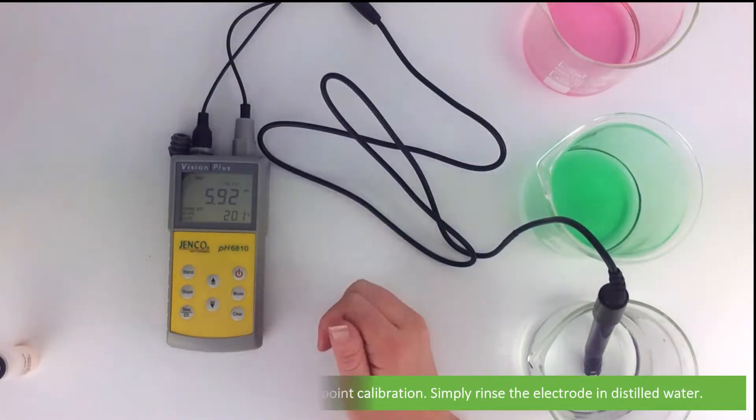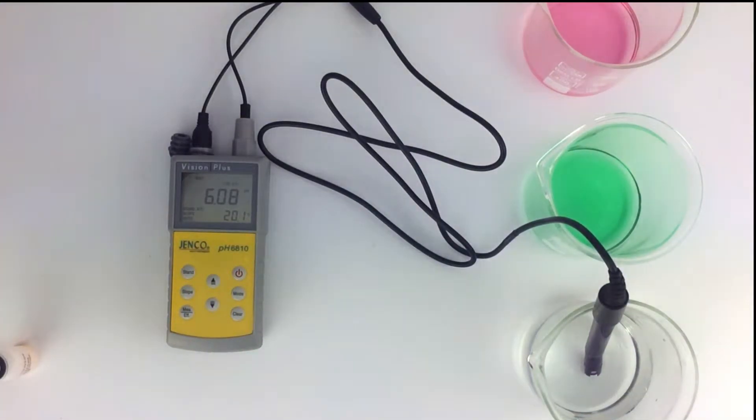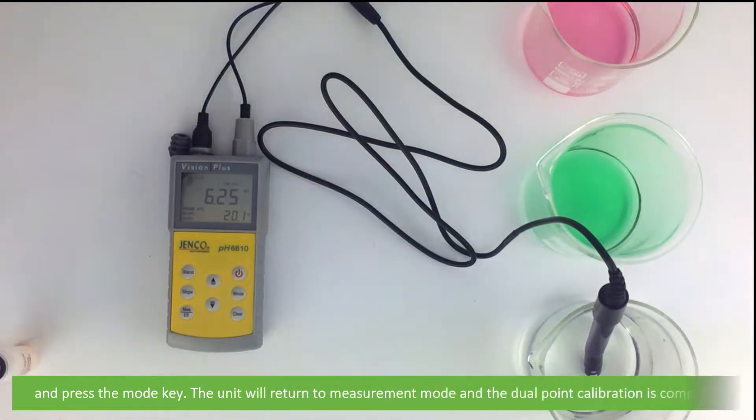Simply rinse the electrode in distilled water and press the mode key. The unit will return to measurement mode and the dual-point calibration is complete.